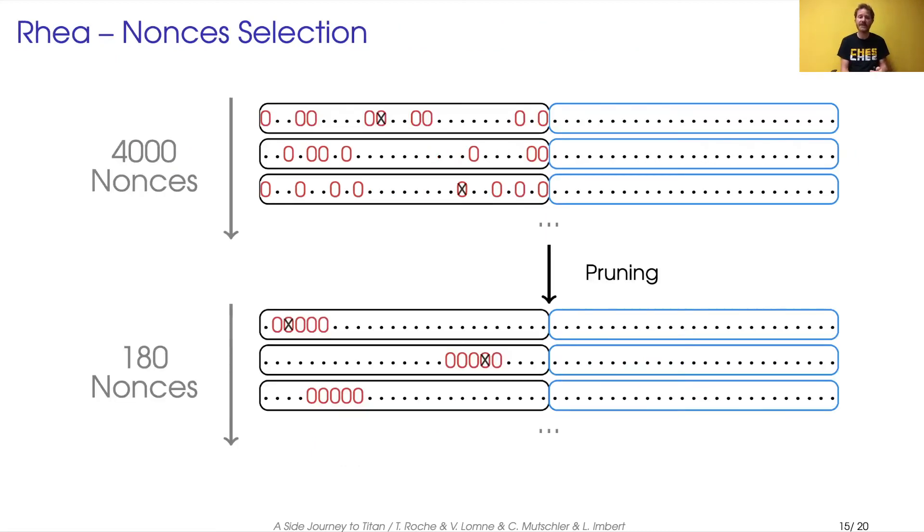I wanted just to stress out that for the attack to work, we cannot use all the information we have. We had to select the nonces that have five or more consecutive zeros. So from 4,000 nonces we had on Rhea, we ended up with 180 after this pruning phase.